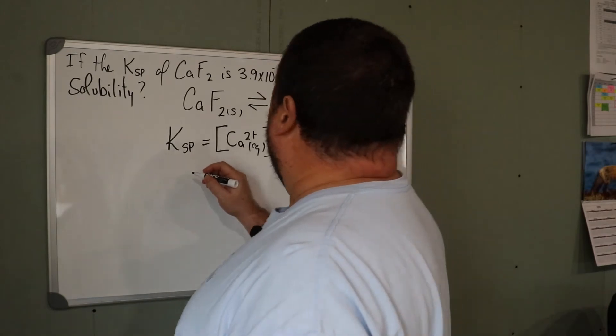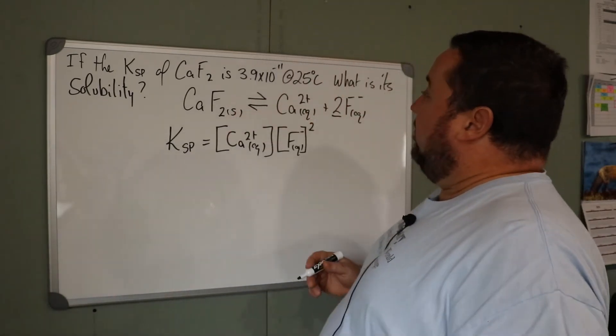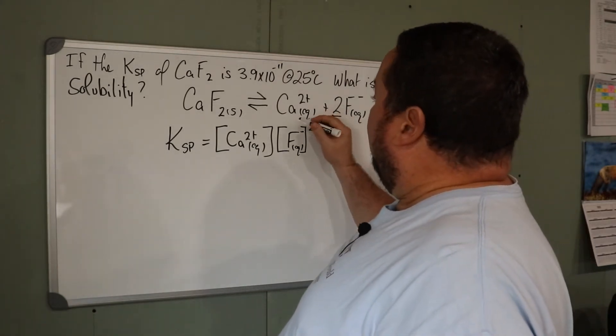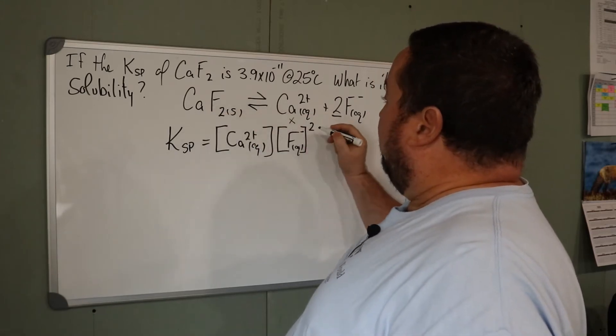Now, if we substitute in our numerical values, again we need to think about what happens when the calcium fluoride dissolves. We get a small amount dissolving.